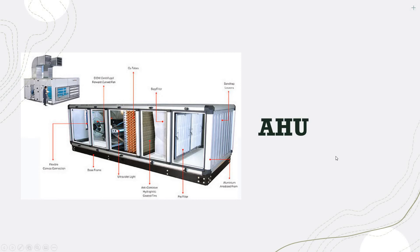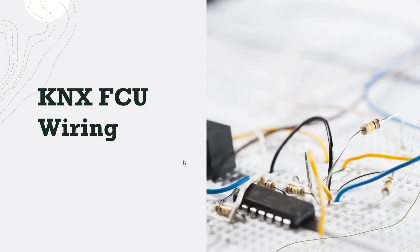AHU stands for Air Handling Unit. In home automation it's quite difficult to find an AHU installed, but in large palaces or mega villas they use AHU types. AHUs are typically linked to a chilled water system with different modules to interface them to our system. Alternatively, if BMS DDC controllers are installed, you can link from the DDC controller to the KNX system. We'll focus on the basic FCU wiring related to home automation — I'll cover chilled water and commercial HVAC systems in a different video.